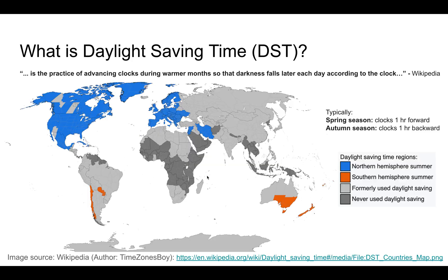What is daylight saving time? Daylight saving time starts usually in March in the US and then ends in November. In March, the clock is moved one hour forward, so when you wake up in the morning and it's seven o'clock, it's actually six o'clock — you're getting that one extra hour during the day. In November the clock is moved one hour back. As shown on the map, the blue and orange regions are the ones where daylight saving time is in use, whereas all other grayed-out regions have either used it previously or have never used daylight saving time.